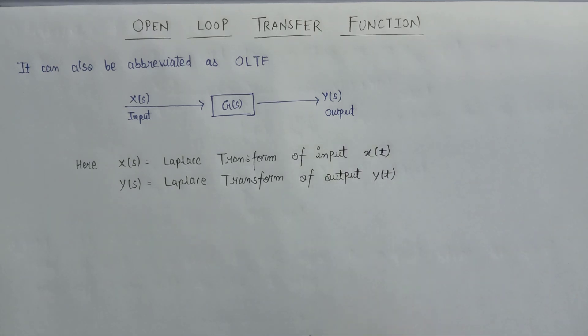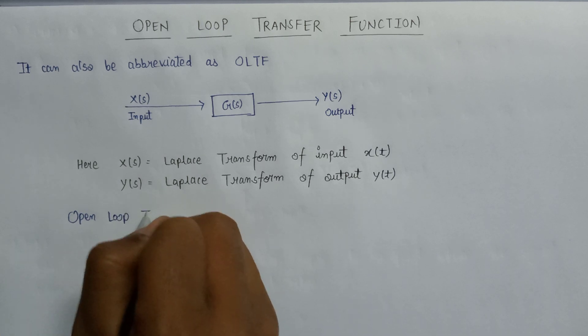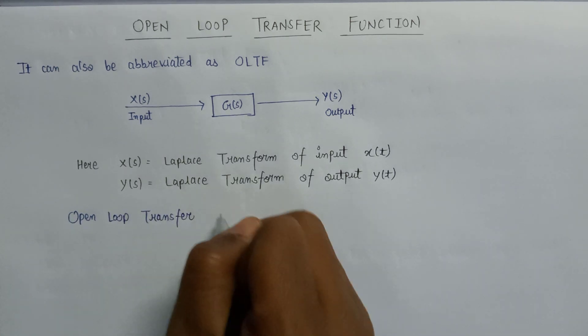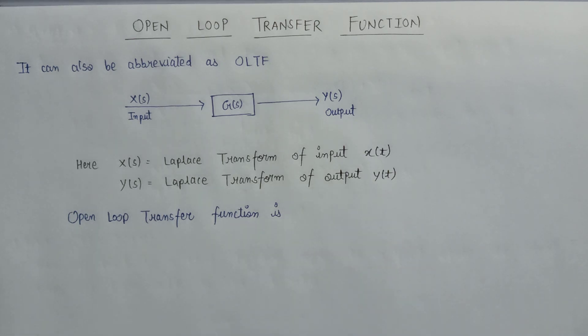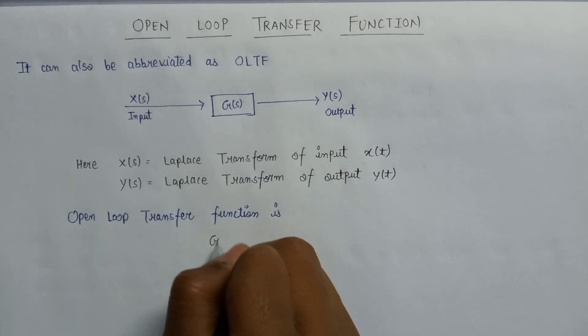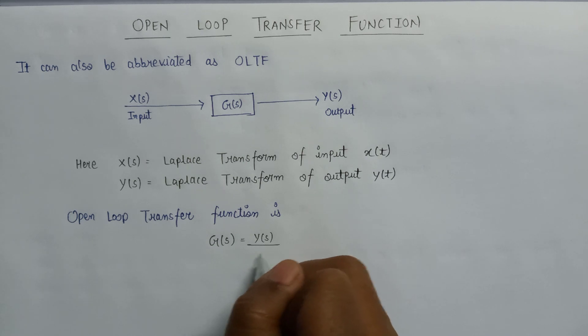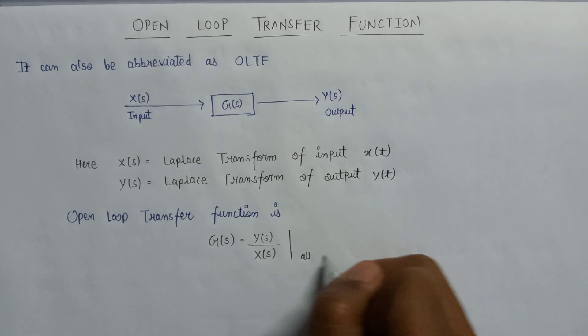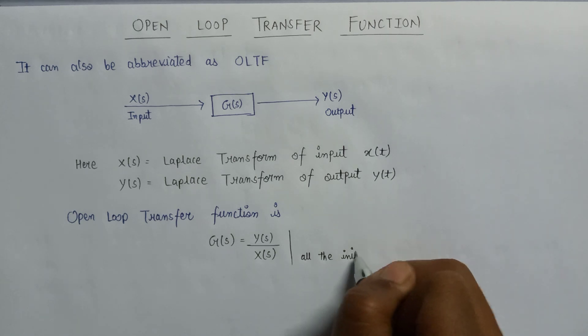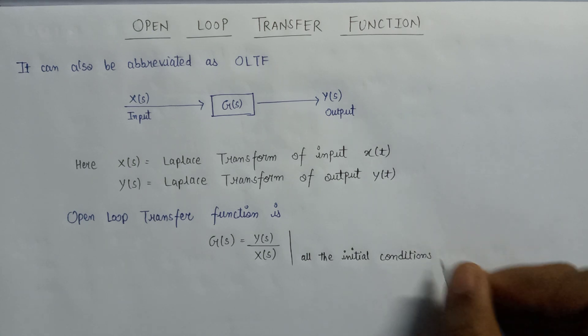The open loop transfer function is given as G(s) equals Y(s) over X(s), assuming that all the initial conditions are equal to zero.